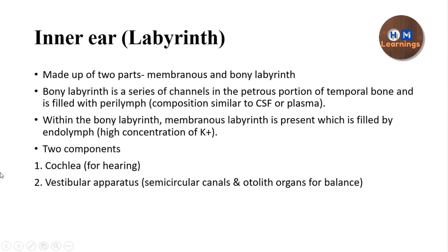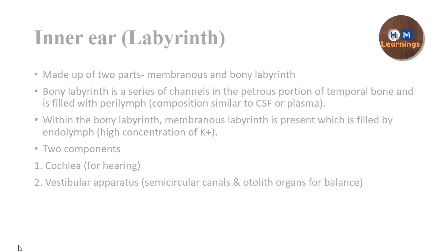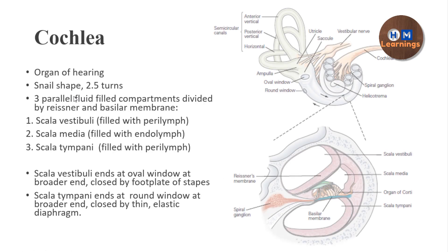Now, as I have introduced the inner ear, we can start regarding hearing. The cochlea is called the organ of hearing, and the word cochlea means snail because of its shape. It makes 2.5 turns — it completes one full turn, then a second turn, and the third turn is a half turn.